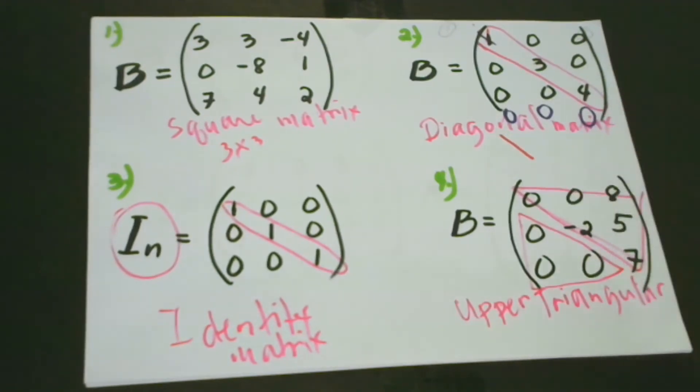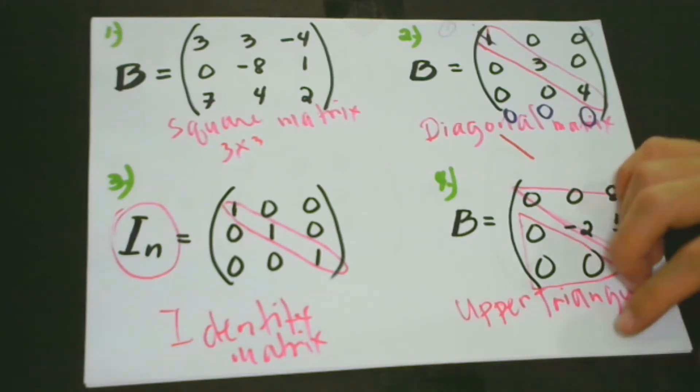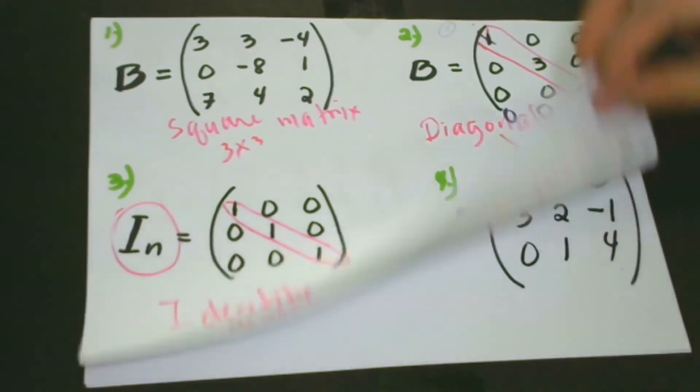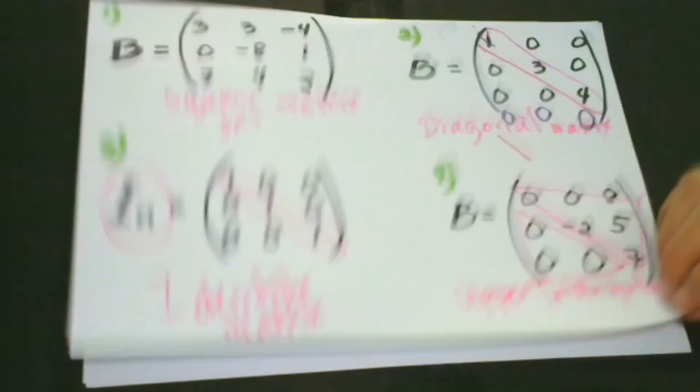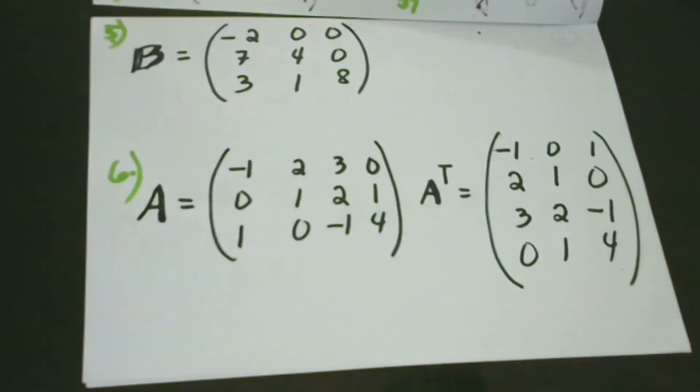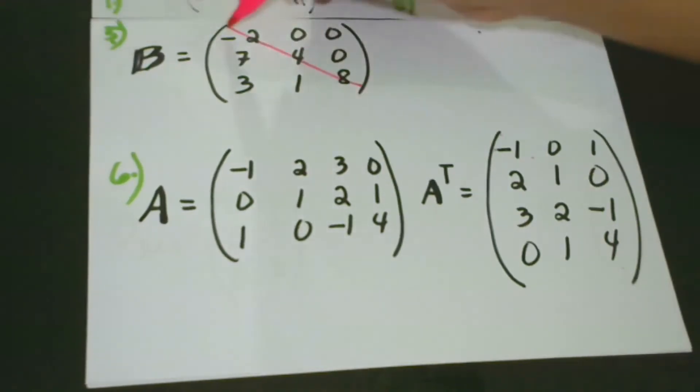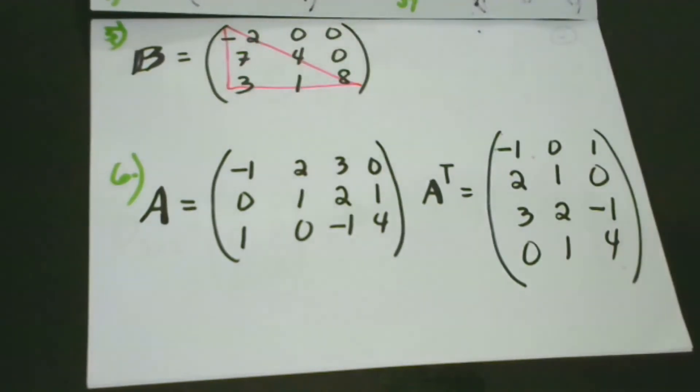The next kind would be a counterpart of the upper triangular matrix, which is called the lower triangular matrix. This is just the opposite of this one. If we can find here the zeros in the upper part, in this case, we can find all the zeros here in the upper part.